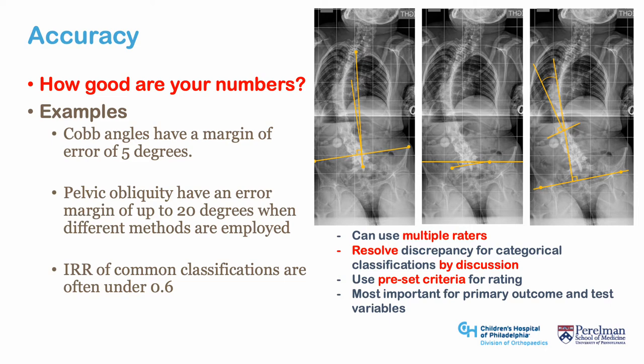Accuracy. This can be considered for all numbers, but is particularly important for your Y or dependent variable and your primary X variable or primary independent variable. A good example of this is the Cobb angle. It has a well-known inter-rater disagreement of about 5 degrees. Pelvic obliquity, on the other hand, is another measurement for scoliosis and can have 10 or more degrees of disagreement. Inter-rater reliability of many commonly used classifications is 0.6 or sometimes even lower. Consider using multiple raters and resolving disagreements by discussion, using pre-set criteria and giving raters descriptions of how to perform measurements to minimize variation and improve accuracy.